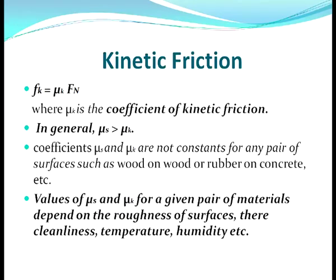Similarly, for kinetic friction we can write Fk = μk × Fn, where μk is the coefficient of kinetic friction. In general, μs is greater than μk, meaning the coefficient of static friction is greater than the coefficient of kinetic friction. These two coefficients μs and μk are not constants for any given pair of surfaces such as wood on wood or rubber on concrete. Their values depend on the roughness of the surfaces, cleanliness, temperature, humidity, and other factors.